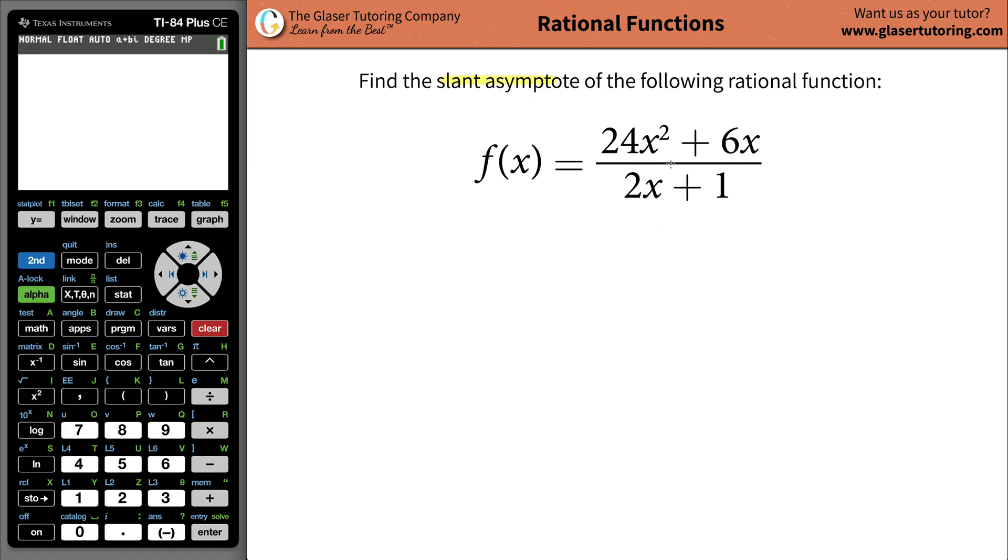Now to find the slant asymptote, it turns out that we need to do synthetic or long division. Now it doesn't matter which one you do for this, but it's probably best to do, it doesn't really make a difference, but we'll do long division.